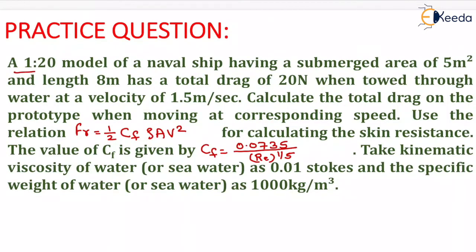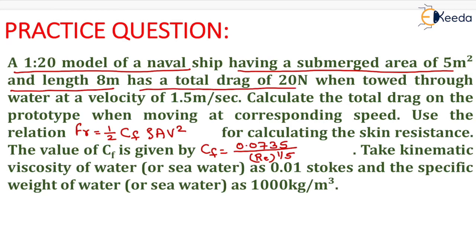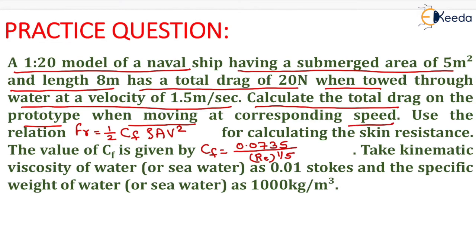The question is given as: a 1:20 model of a naval ship having a submerged area of 5 meter square and length 8 meter has a total drag of 20 Newton when towed through water at a velocity of 1.5 meter per second. Calculate the total drag on the prototype when moving at the corresponding speed.